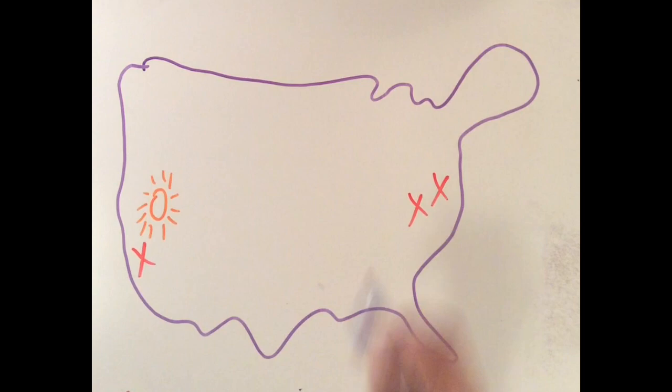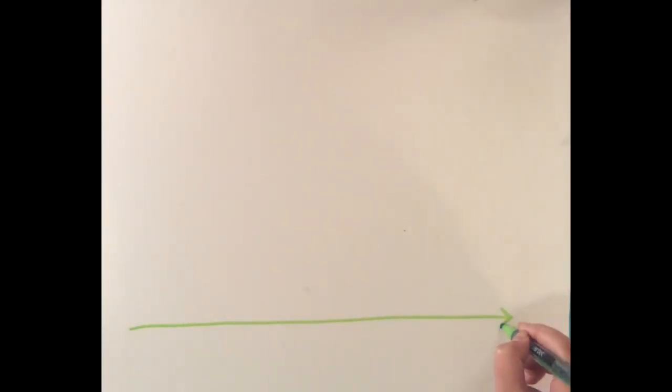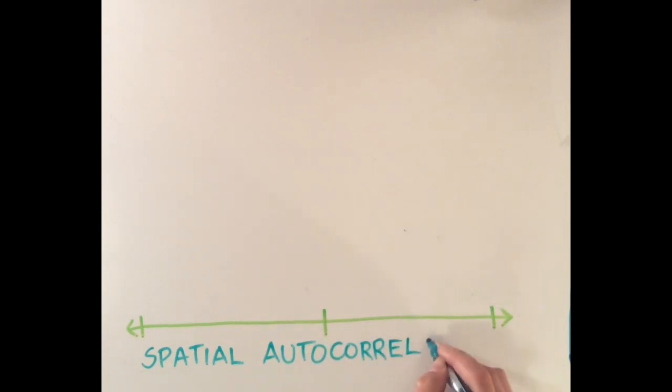Tobler's law provides a simple introduction to a crucial concept in geography. Spatial autocorrelation examines how similar one data point is to other data points around it, to understand if phenomena relate in space.